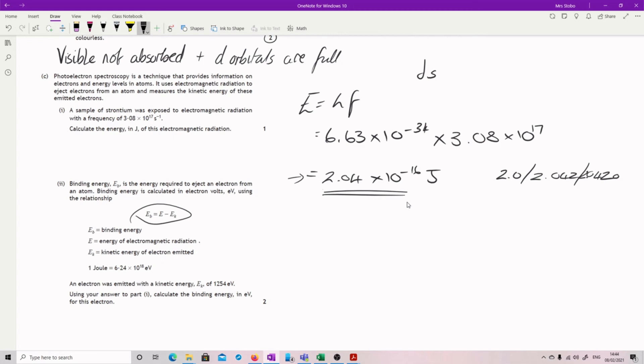So we are in joules currently. You're told a joule equals 6.24 times 10 to the 18 electron volts. And you're told that the electron was emitted with a kinetic energy of 1254 electron volts. Use your answers to calculate the binding energy.